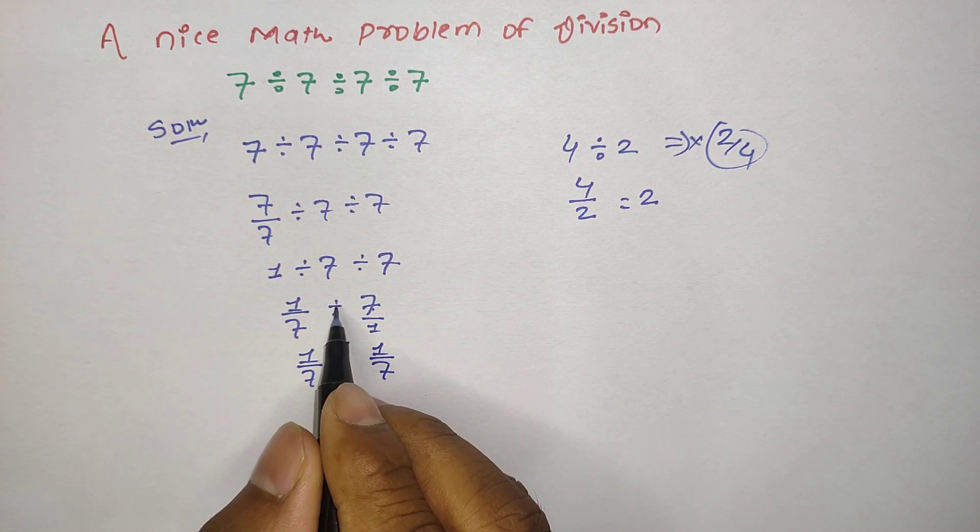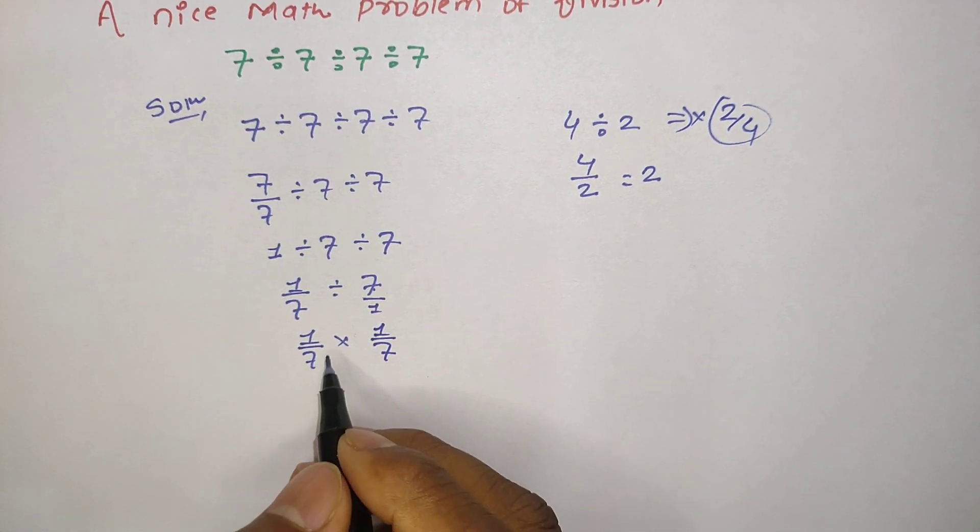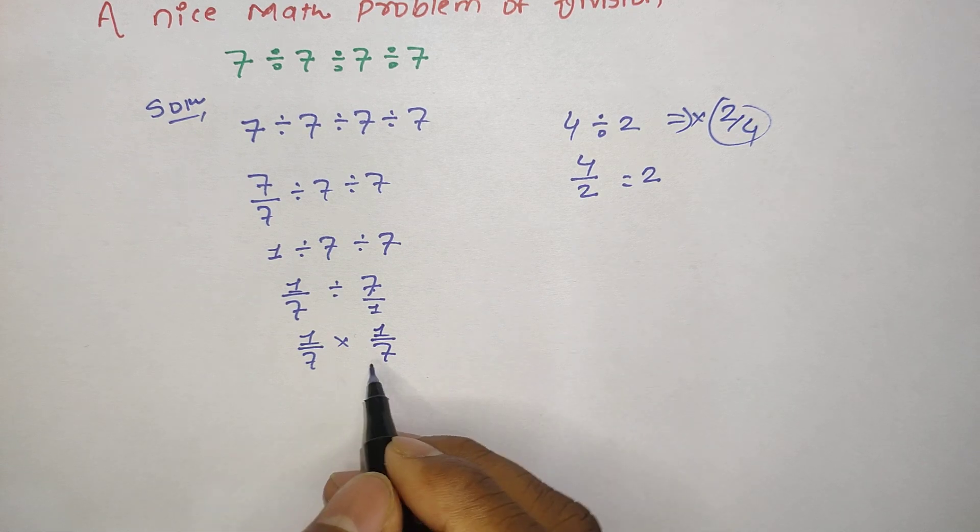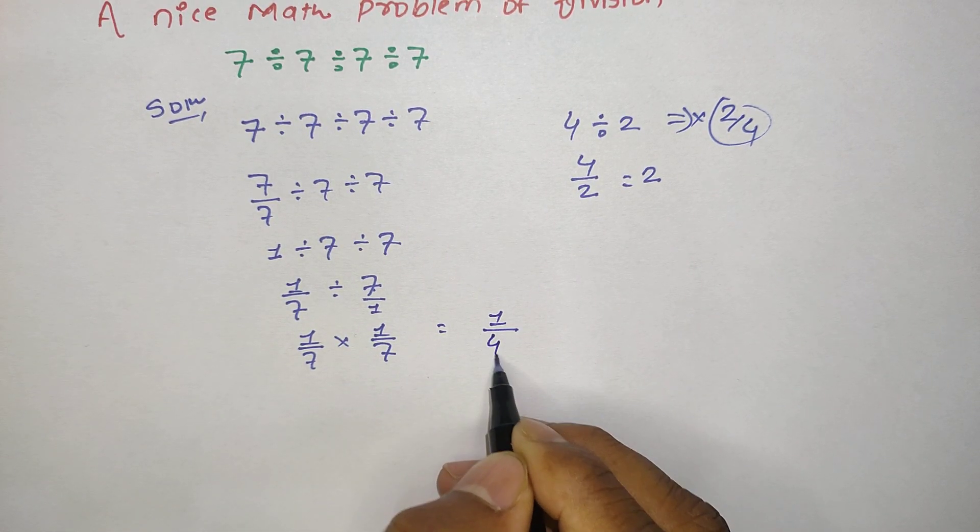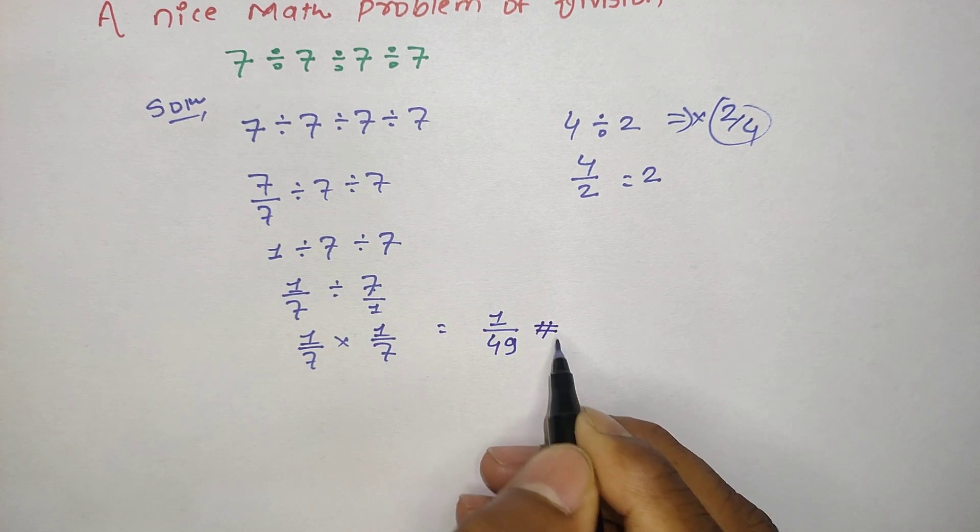So it is 1 over 7. Whenever we have to change divide into the multiplication form, then we can multiply numerator to numerator and denominator to denominator. That is 1 times 1, and 7 times 7 is 49. So this is the final answer of this question.